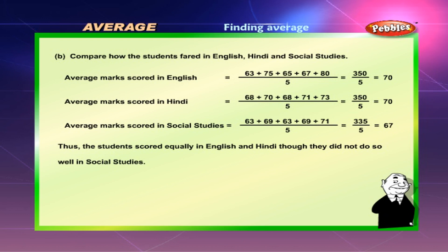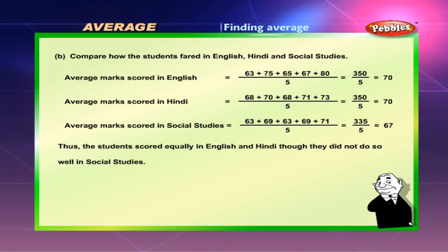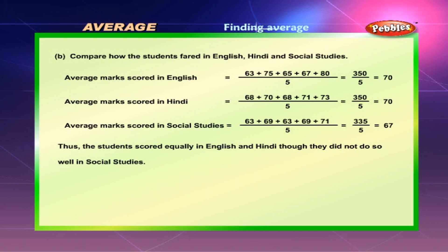Average marks scored in Hindi: 68 + 70 + 68 + 71 + 73 divided by 5 is equal to 350 divided by 5, which is equal to 70. Average marks scored in Social Studies: 63 + 69 + 63 + 69 + 71 divided by 5 gives 335 divided by 5, which is equal to 67. Thus the students scored equally in English and Hindi, though they did not do so well in Social Studies.